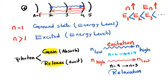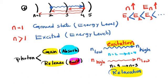So we always have these two terminologies: excitation means they absorb energy, and relaxation means they release energy, produce color, or emit energy.